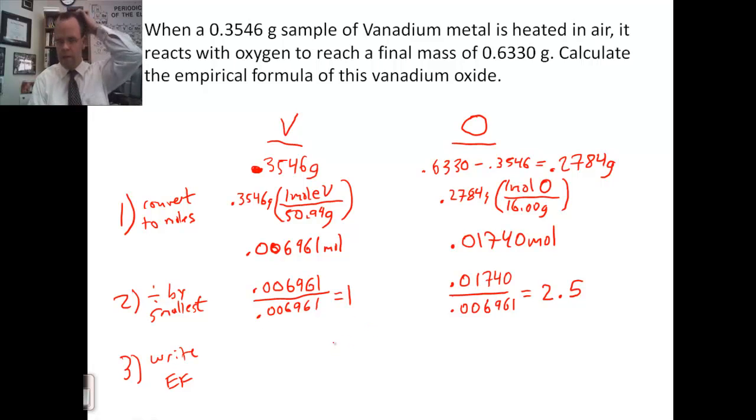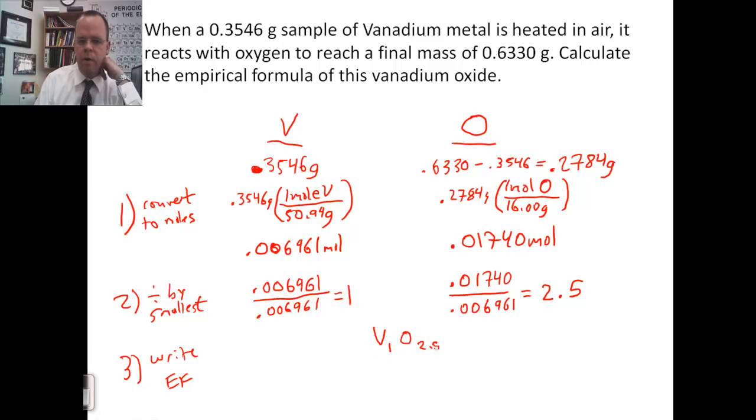Now, there's no possible way to have a ratio because the next is to write the empirical formula. You can't have a ratio of 1 to 2.5. If this were just 1 and 2, I would write a formula of V1O2. But I can't have a ratio of V1 because right now what I would have is V1O2.5. And I can't have 2.5 as a subscript. So, I need to multiply to get this to a whole number. In this case, the simplest whole number that I could get to is 5 by multiplying each of these by 2. So, my empirical formula is V2O5.